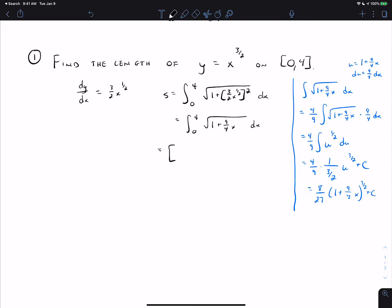So we'll go 8 over 27 times 1 plus 9 fourths x to the 3 halves evaluated from 0 to 4.